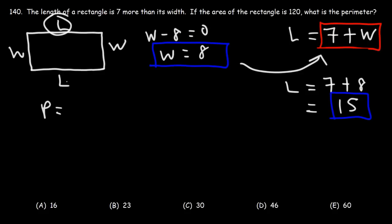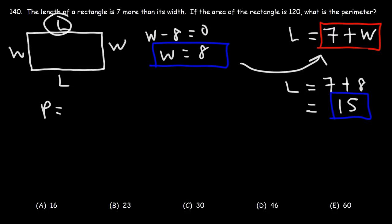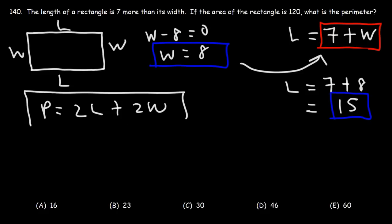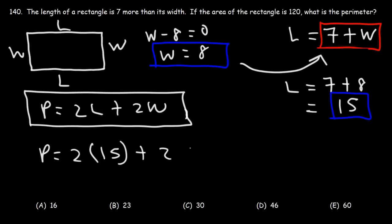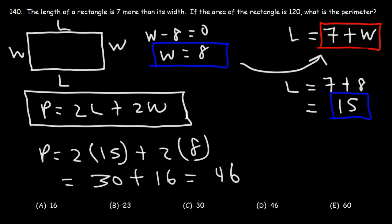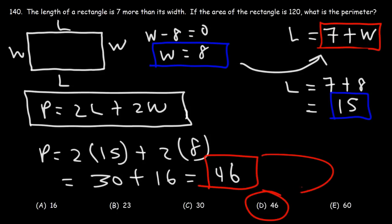The perimeter of the rectangle is the sum of its four sides: L plus L plus W plus W, which is two L plus two W. So that's two times 15 plus two times 8: 30 plus 16 equals 46. Answer choice D is correct — the perimeter of the rectangle is 46.